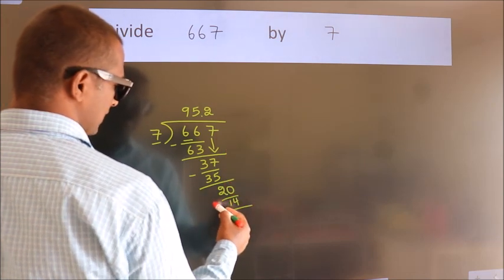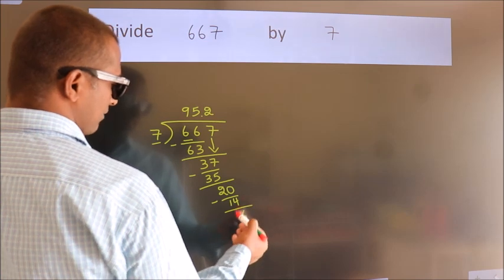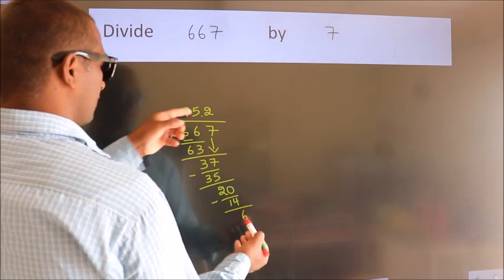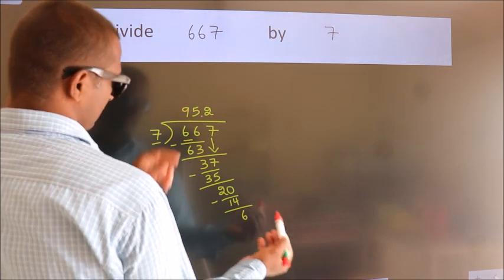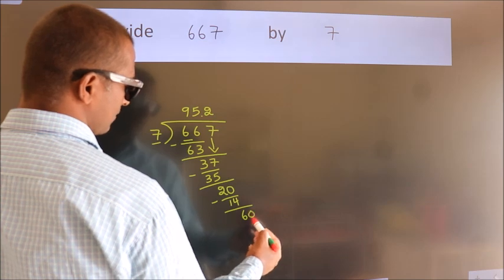Now we subtract and get 6. Since we already have the decimal, we directly take 0 to make 60.